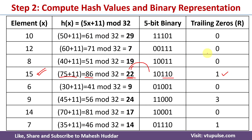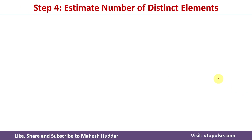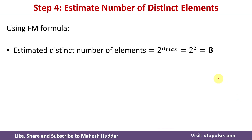Similarly, we calculate trailing zeros for all elements. Once we find the trailing zeros for all elements, we check which one has the maximum trailing number. Here we can see that 3 is the maximum, so r_maximum = 3. Using the formula, the estimated distinct elements = 2 raised to r_maximum = 2 raised to 3 = 8.